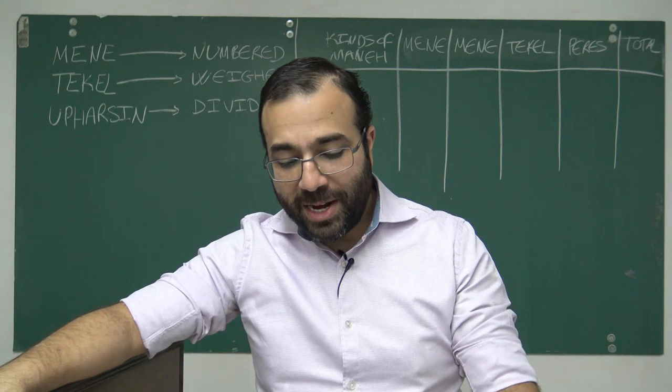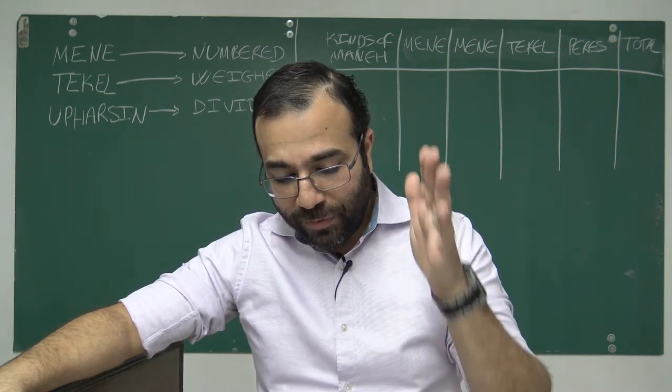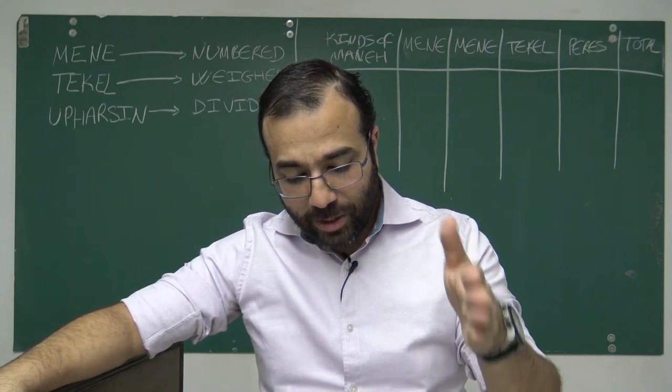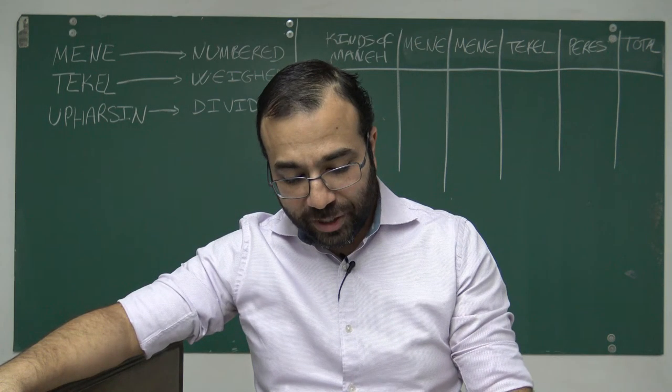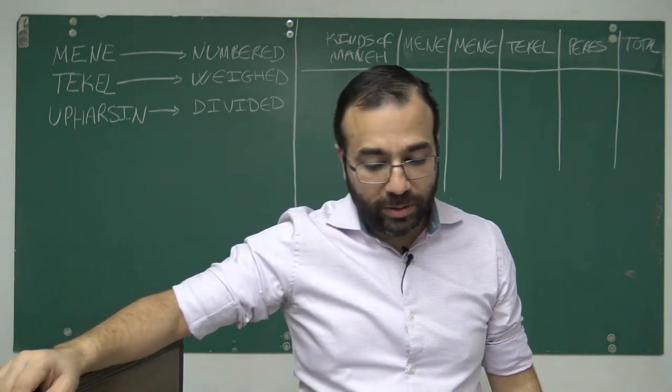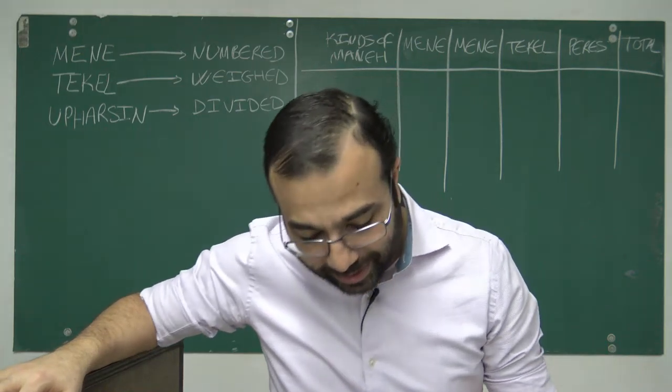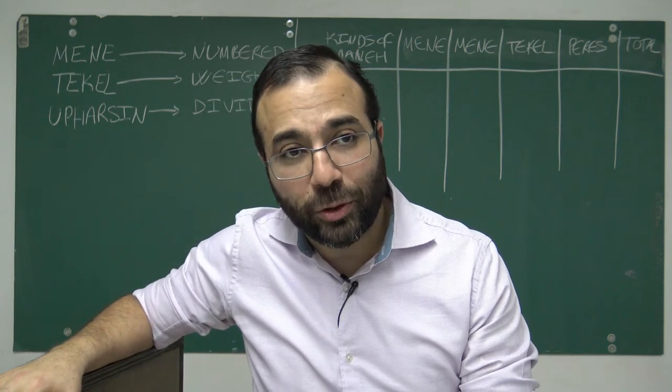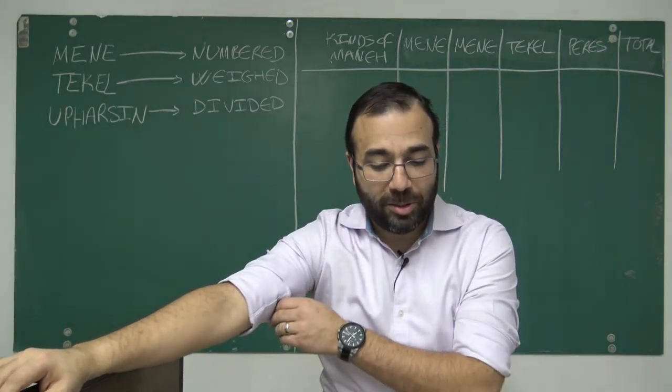This is the interpretation: Mene, God has numbered thy kingdom and finished it. Tekel, thou art weighed in the balances and art found wanting. Perez, thy kingdom is divided and given to the Medes and Persians. The Lord is very succinct in how he speaks.